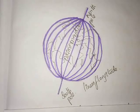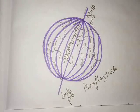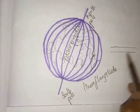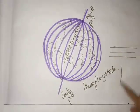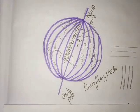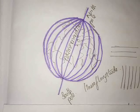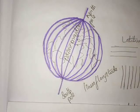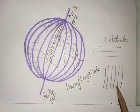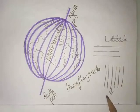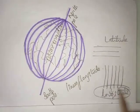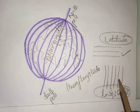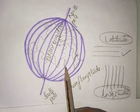Let us recall once again about lines of longitude. These are imaginary vertical lines — not horizontal like in latitude. In latitude we saw horizontal lines, but in longitude the lines are vertical. So horizontal lines are seen in latitude, whereas vertical lines are seen in longitude.